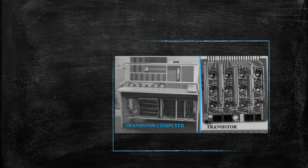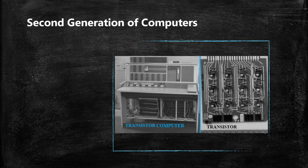The second generation of computers ran from 1956 to 1963. Transistors replaced vacuum tubes, which was a big improvement. However, heat generation remained almost the same and required equal cooling. The introduction of transistors greatly reduced the size of computers. These computers used assembly language and could store instructions for later use. The initial versions of computers in this generation were developed for the atomic energy industry.